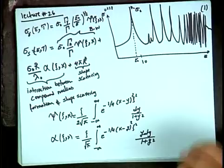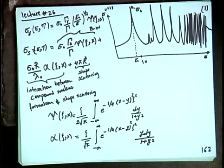We then moved to the resonance region and discussed two approximations: the narrow resonance (NR) approximation and the wide resonance (WR) approximation. For wide resonances, the energy loss per collision is small compared to the resonance width, so the neutron undergoes multiple collisions inside the resonance and is likely absorbed. For narrow resonances, the energy loss is larger relative to the resonance width, and a single collision may kick the neutron out of the resonance.